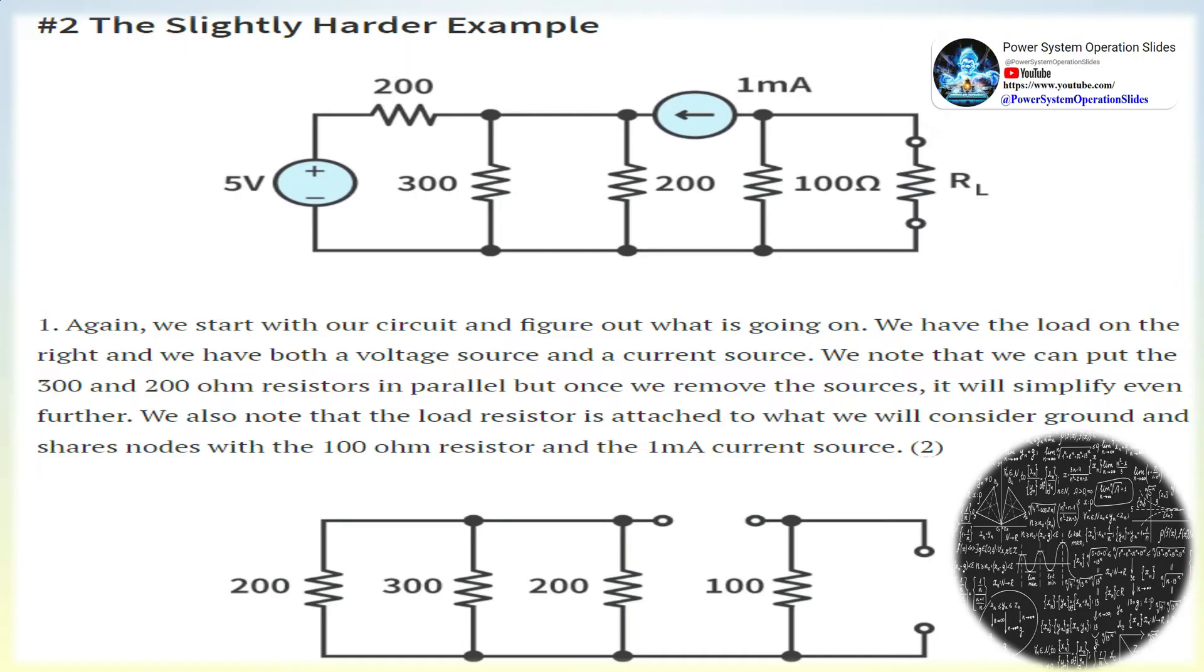In other words, there is one Thevenin equivalent circuit, values of VTH and RTH for a complex circuit given two specific nodes, not just the circuit as a whole.